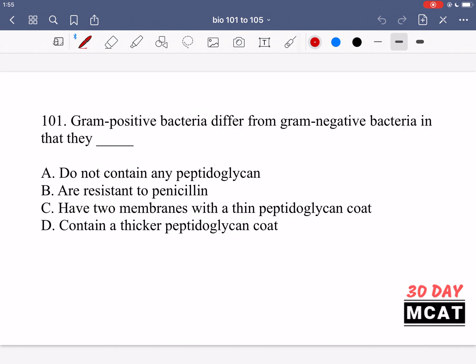In question 101 it says gram-positive bacteria differ from gram-negative bacteria in that they blank. So how do gram-positive and gram-negative bacteria differ? You should know that both of these have a peptidoglycan layer. But the main difference when regards to this peptidoglycan layer is that gram-positive have a thicker layer. So positive are thicker, this one is thinner, and we're talking about the peptidoglycan layer.